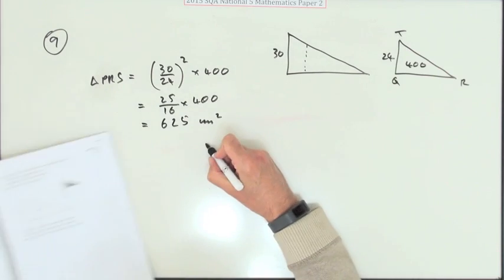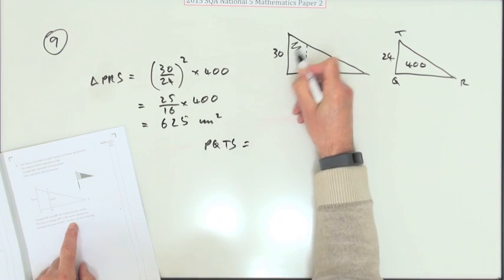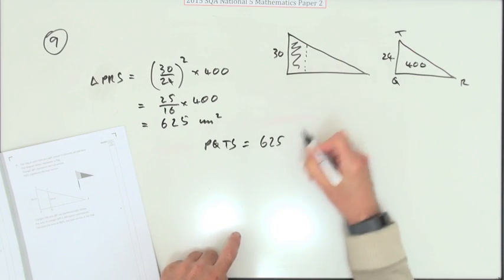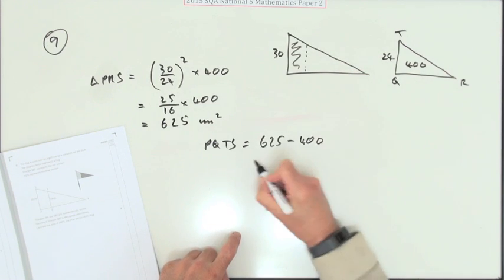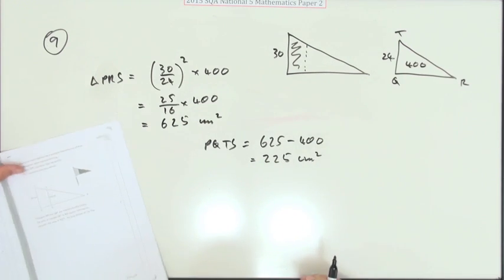Which means the area that they're looking for, they're calling that area PQTS, that's this bit in here, will be 625, the area of the whole triangle, minus 400, the missing part, which is 225 centimeters squared.